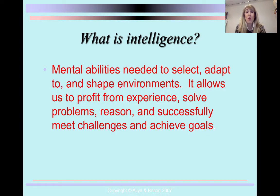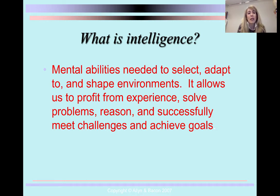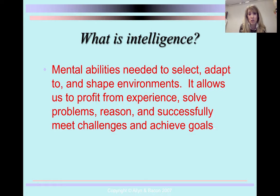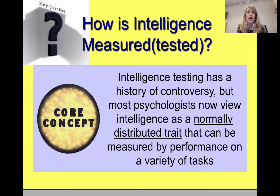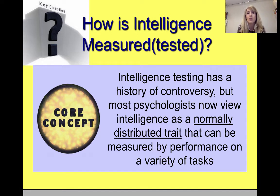We're going to start by focusing on intelligence, and the question is: what is intelligence? There's a lot of controversy and debate around what it means to be smart, whether it's one thing or multiple things. In general, the definition is the mental ability needed to adapt to, shape, and select your environment, solve problems, reason, and meet challenges and goals in your life. We'll start with the history of measuring intelligence, then move to how it's measured today, including some newer tests that measure your abilities to reason and problem-solve.